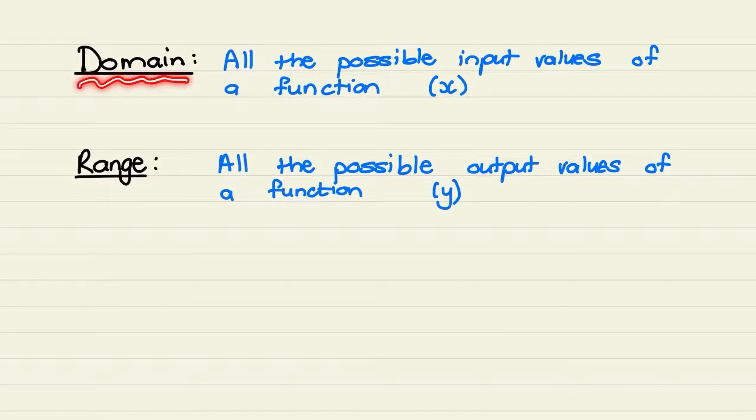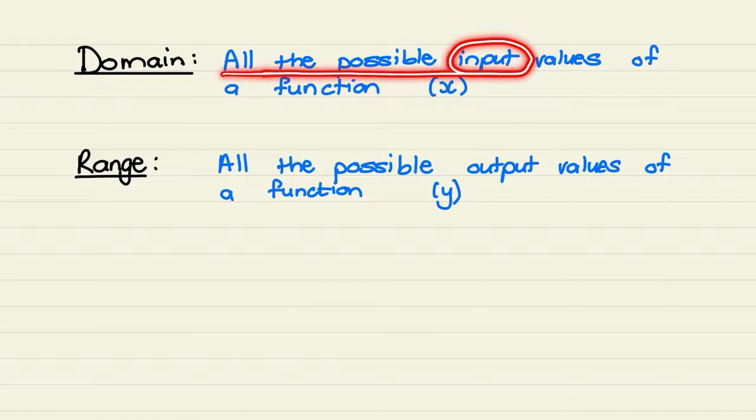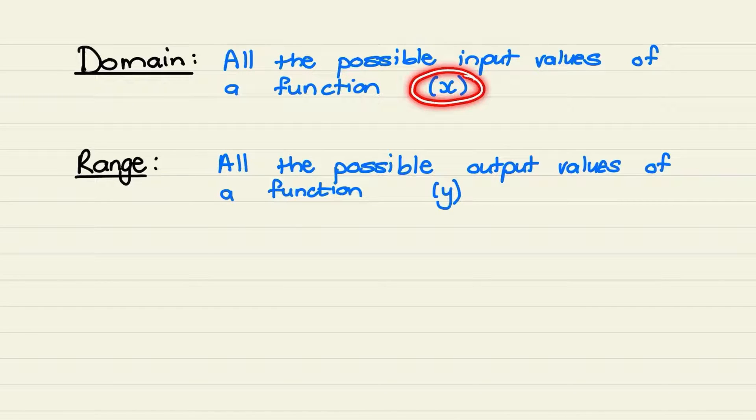Domain is all the possible input values or x values of a function. And the range is all the possible output values or y values of a function.